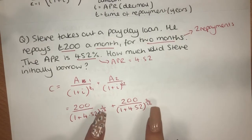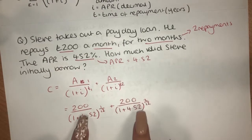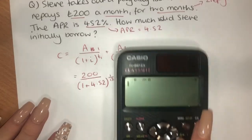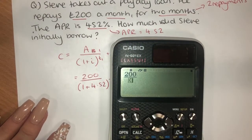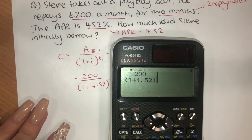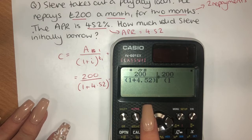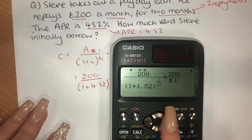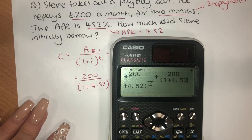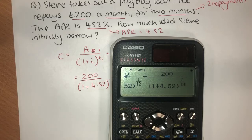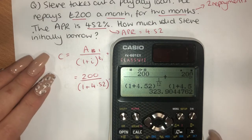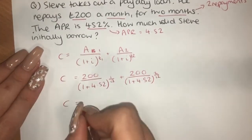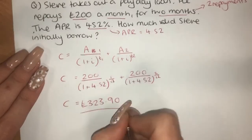So you can start filling in our information. Each repayment is £200, and our APR as a decimal will be 4.52. So the formula becomes: 200 over (1+4.52)^(1/12) added on to £200 over (1+4.52)^(2/12). The biggest things to notice are those fractional powers, and also just be careful that the APR as a decimal is going to be 4.52. Pop it into your calculator and that is £323.90. So the cost of the loan is £323.90.